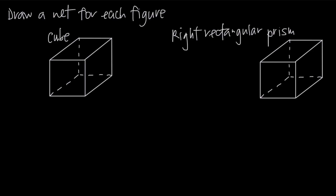In this video, we're talking about how to draw nets for right rectangular prisms. In the first example, we're going to draw the net for a cube. A cube has equal length, width, and height — we can label them all as side length S. When drawing a net for a three-dimensional figure, the net is like the shape a piece of paper would have to be if you were going to fold it into that hollow object.